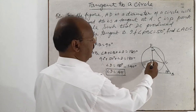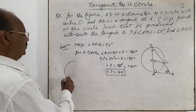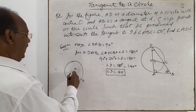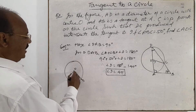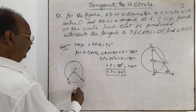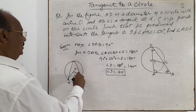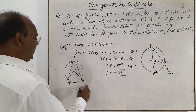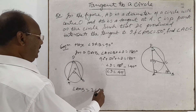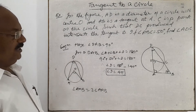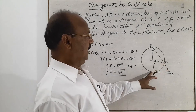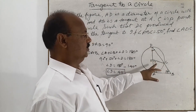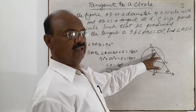Now we can find angle AOC using the circle property: if AB is any arc, the angle subtended at the center by that arc — meaning angle AOB — is twice the angle subtended at any point on the circumference on the same side, meaning angle APB. We apply this here: angle AOC is a central angle and angle ADC is subtended by the same arc AC at the circumference.